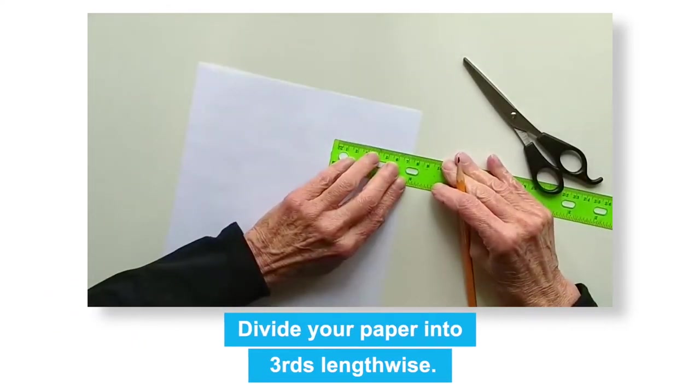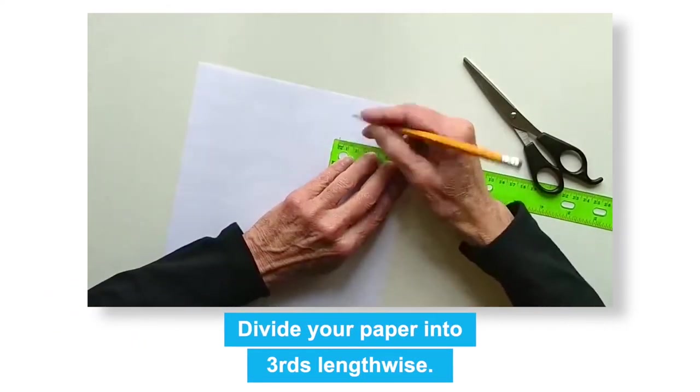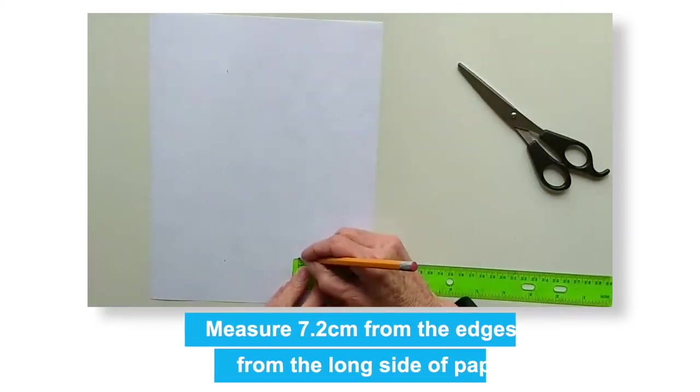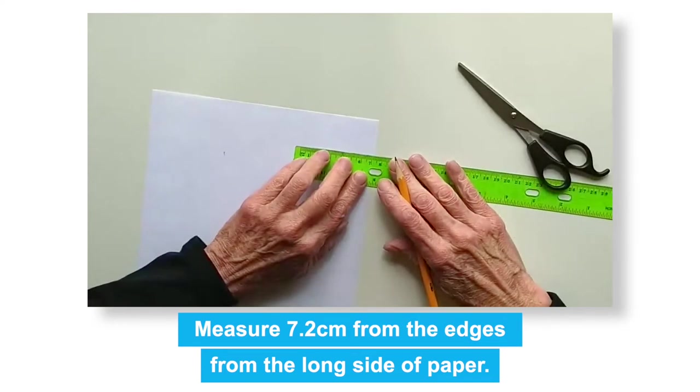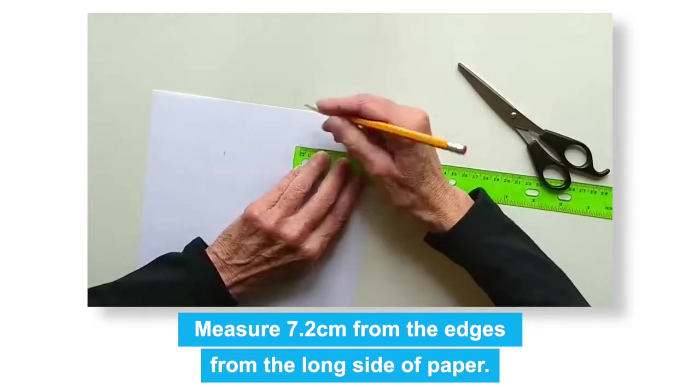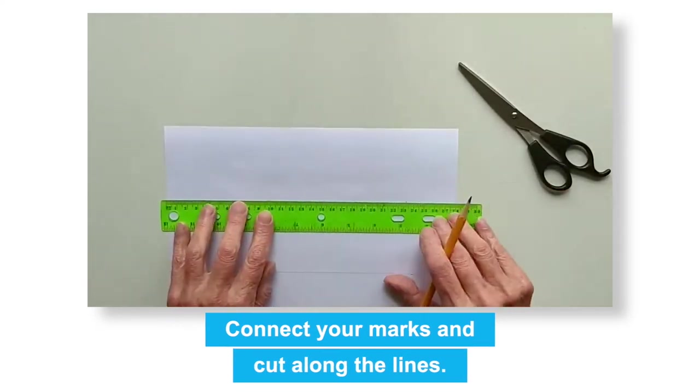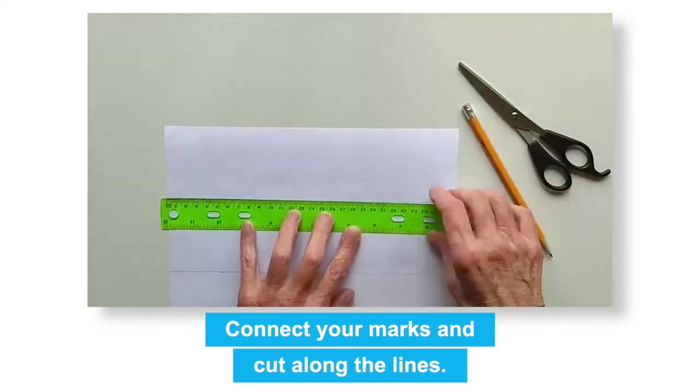We're going to divide a piece of eight and a half by eleven inch paper into thirds lengthwise. Use a ruler to measure seven point two centimeters from the edges of the long sides of your paper. Draw lines that connect your marks. Cut along those lines with your scissors.